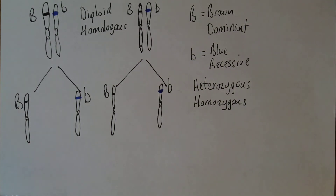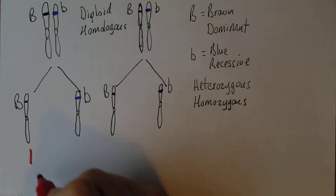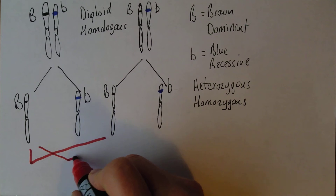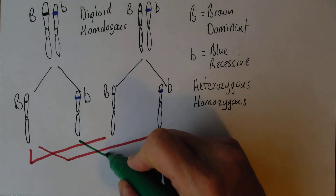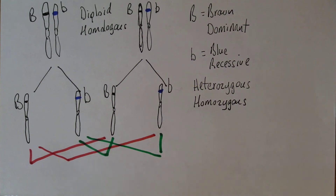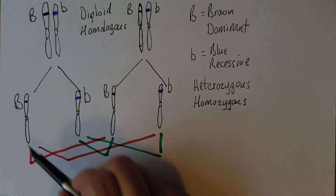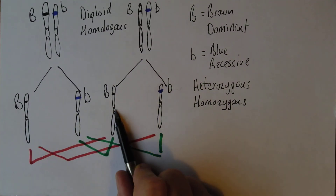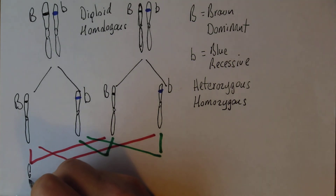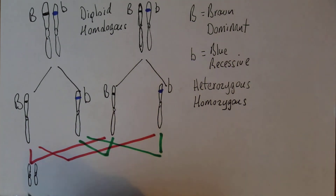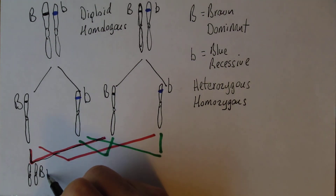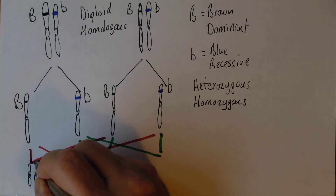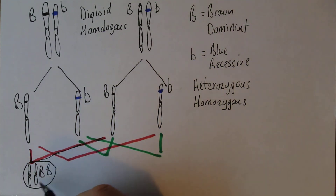These gametes can pair up in various ways. One combination could pair with another, or that one could pair with that one — there are four possible combinations. In one case we add that chromosome to that chromosome; these chromosomes will both be present in the new zygote. Following through, you're going to get a big B from one and another big B from the other. So the child that would develop from this zygote is big B big B.